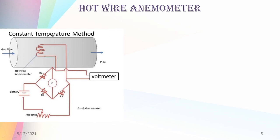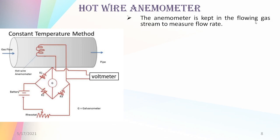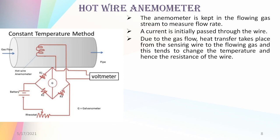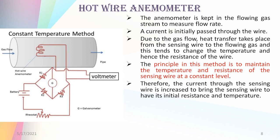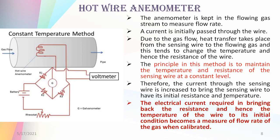In the constant temperature method, the current is varied to maintain the temperature and resistance of the sensing wire at a constant level. Due to gas flow, heat transfer takes place from the sensing wire to the flowing gas, which tends to change the temperature and hence the resistance of the wire. The current through the sensing wire is then increased to bring the wire back to its initial condition. The electrical current required to bring the resistance and temperature of the wire back to its initial condition becomes a measure of the flow rate of the gas when calibrated.